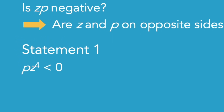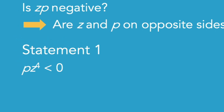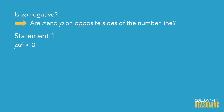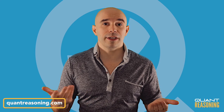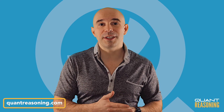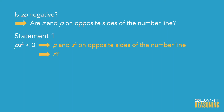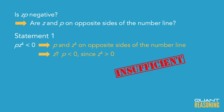Statement one tells us that P and Z to the fourth power are on opposite sides of zero — their product is negative. But we wanted to know whether P and Z are on opposite sides of zero. Does knowing which side of zero Z to the fourth is allow us to infer which side of zero Z is? No. We can already say Z to the fourth won't be to the left of zero, but we have no idea where Z is. We can infer P is to the left of zero — P must be negative because Z to the fourth can't be negative and their product is negative. But where is Z? No idea. So statement one alone is not sufficient; we eliminate A.